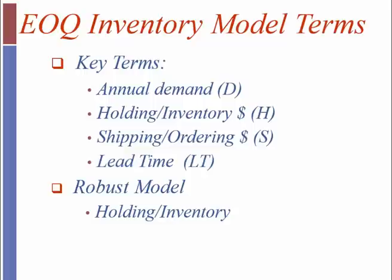It's based on these key terms: annual demand being noted as big D, holding or inventory costs, that's H, shipping and ordering costs, which is S, and lead time. This model is known to be really robust, meaning you can change things - demand, holding costs, shipping costs, lead time - and really, it doesn't change our order quantity that much. That's what being robust means. It's just a pretty tough model.